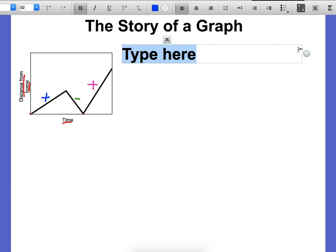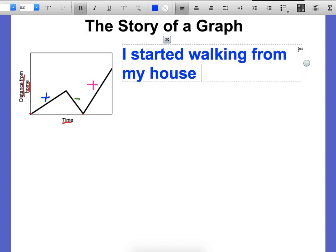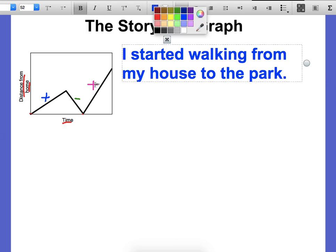So distance from home is zero. So we'll say I started walking from my house to the park. And again, this is blue positive. So away from home because we start at home at zero.